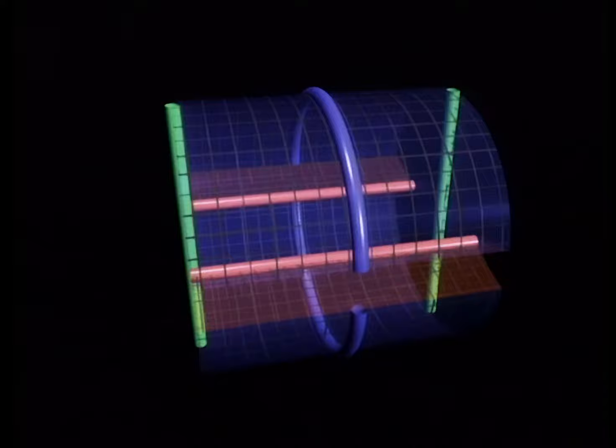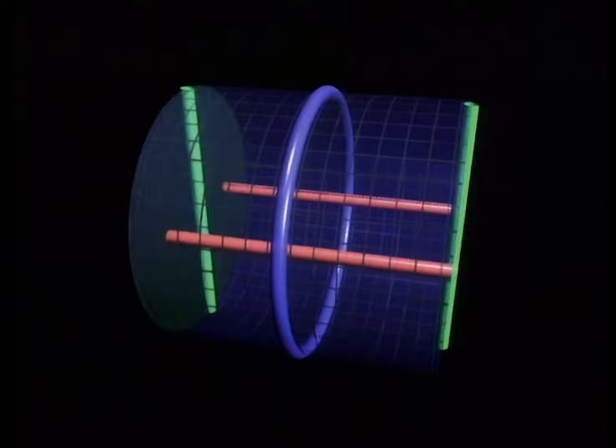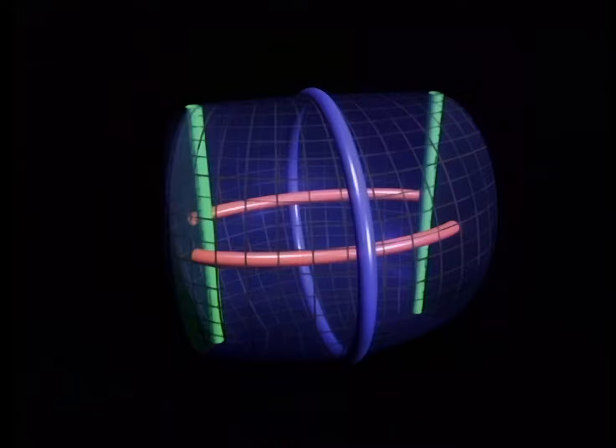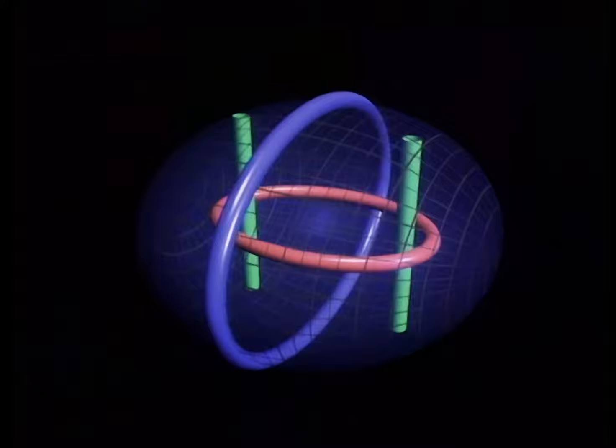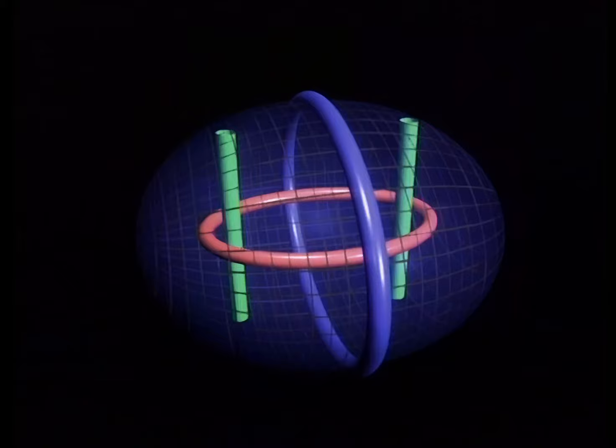We first glue the walls containing red axes and then efface them as they are no longer necessary. Notice how the blue axes are joined together into an ellipse. We now glue the walls containing green axes. This joins the red axes into an ellipse. We have folded along four of the six faces of the original cube to form an ellipsoid.